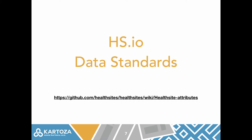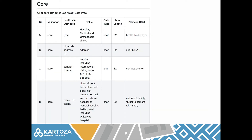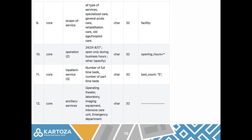The HealthSites data standards are described in the HealthSites Wiki and consist of mandatory fields and core fields. The mandatory fields are very basic — they cover the location, the date of capture, and the name of the facility. The core attributes cover more facility-related things like the kind of facility, its address, contact phone number, and so on. These are all optional, though we obviously want to populate as many as we can.